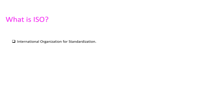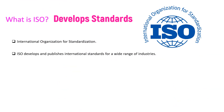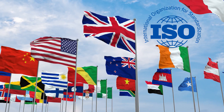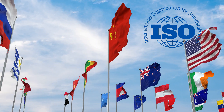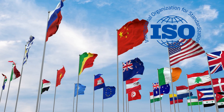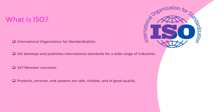Let us first understand what is ISO. It stands for International Organization for Standardization. ISO is an independent, non-government organization that develops and publishes international standards for a wide range of industries and products. It has 167 plus member countries which participate in the development of this standard. The objective of all standards developed by ISO is to ensure that products, services, or systems are safe, reliable, and of good quality.